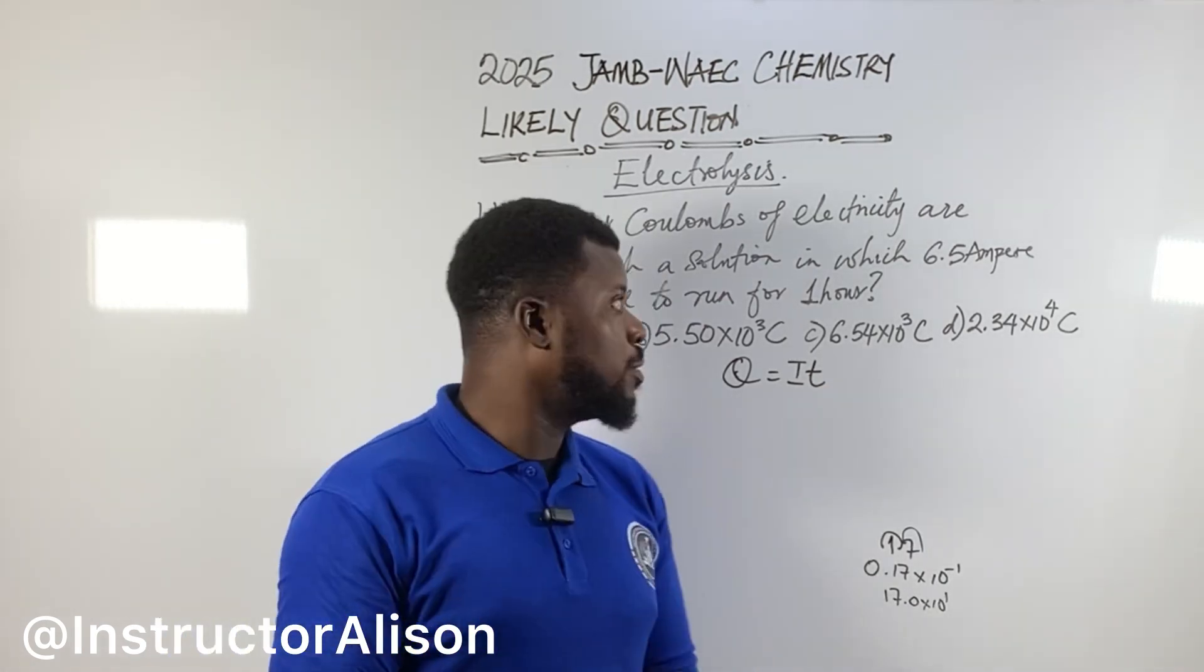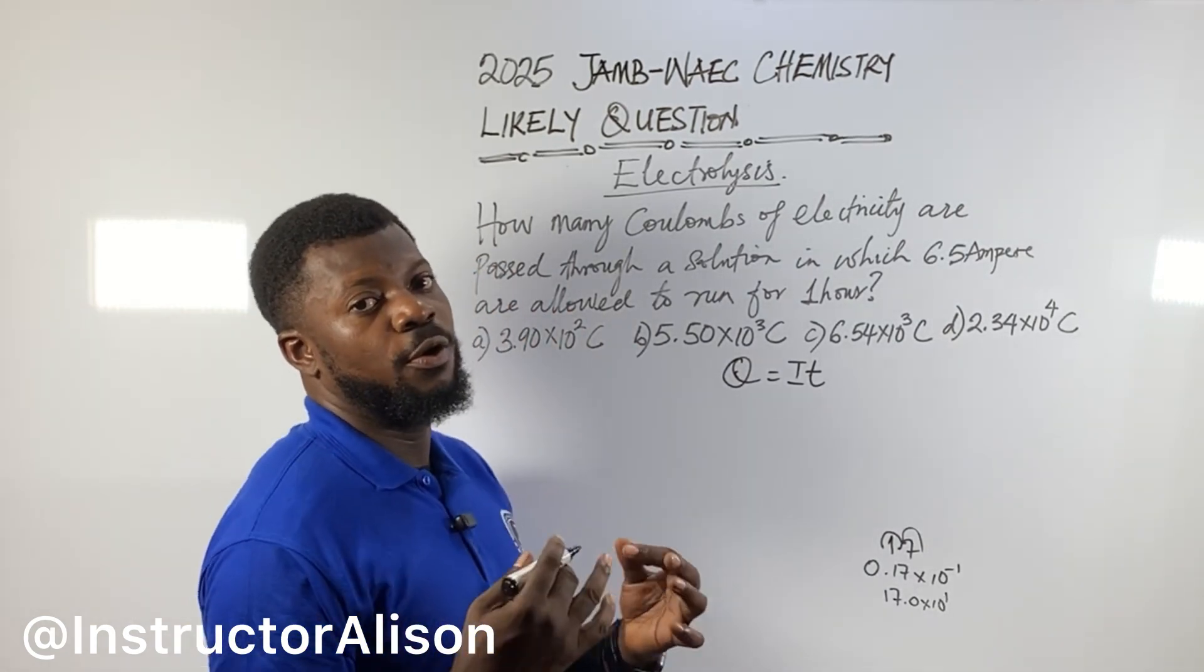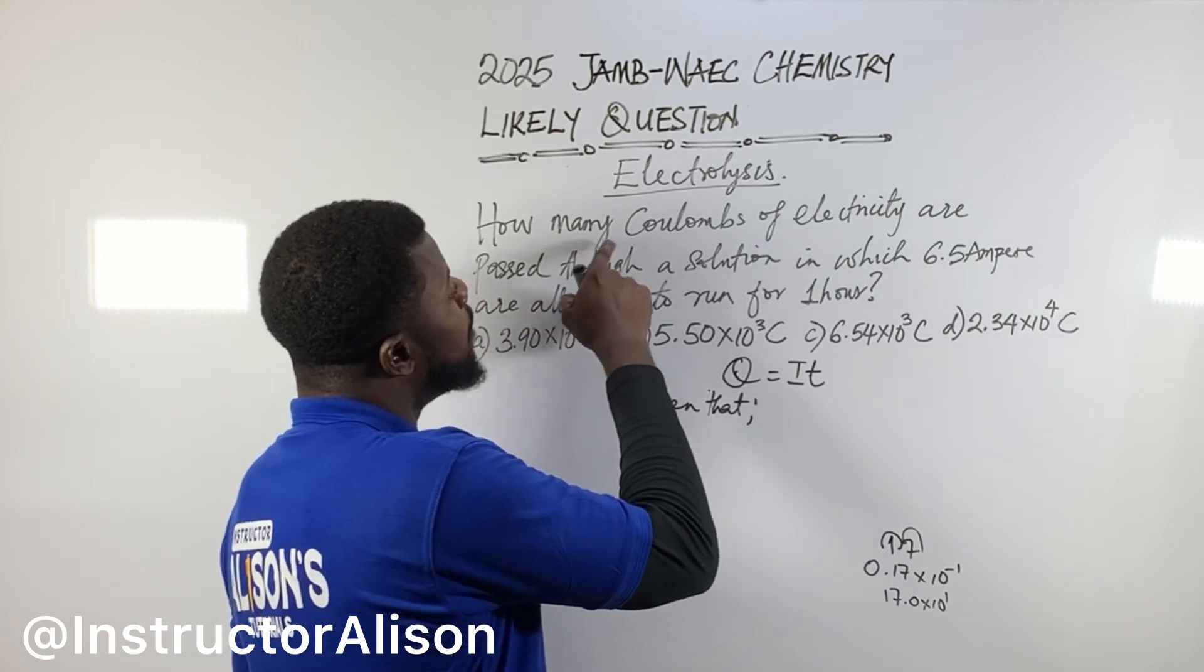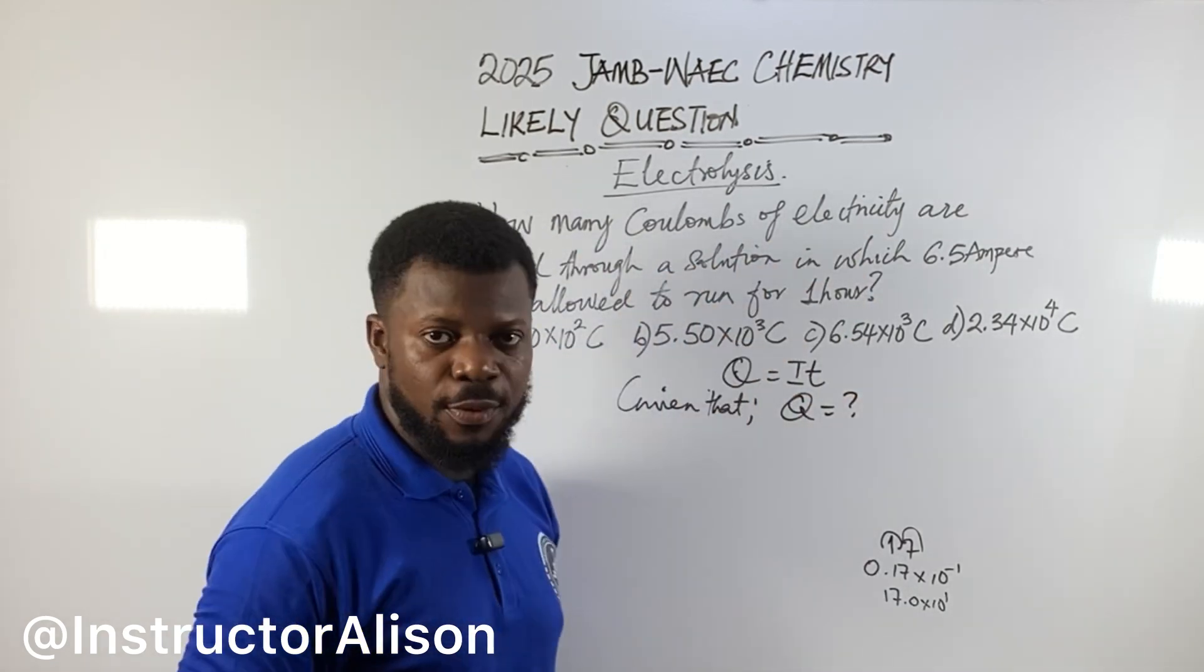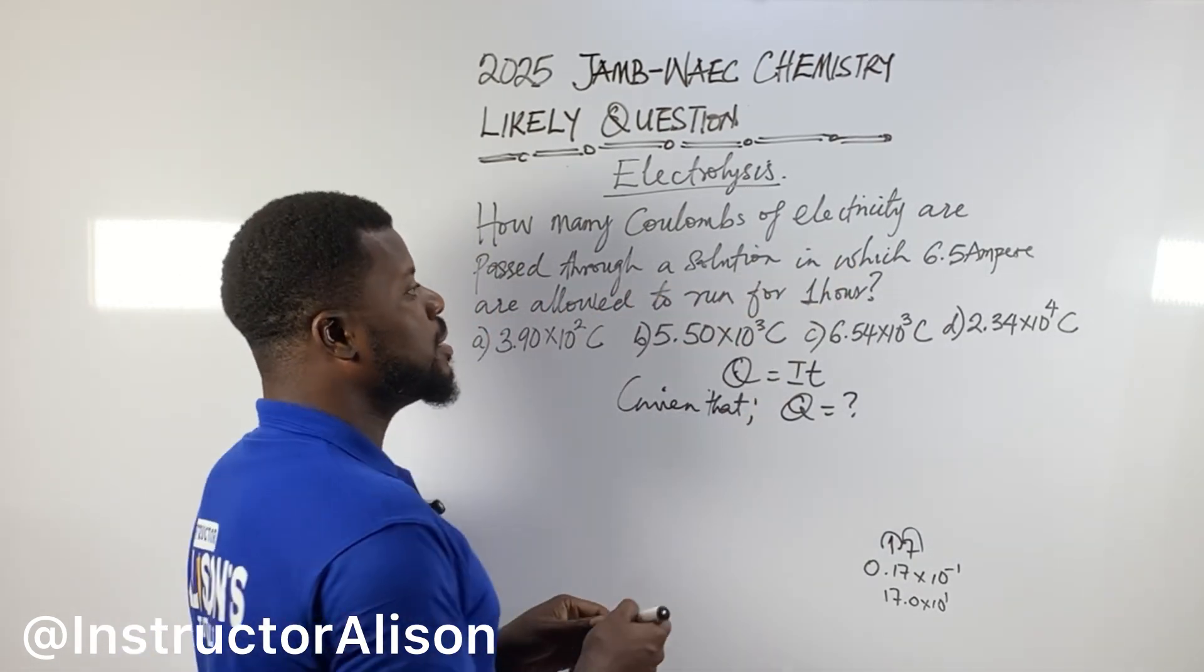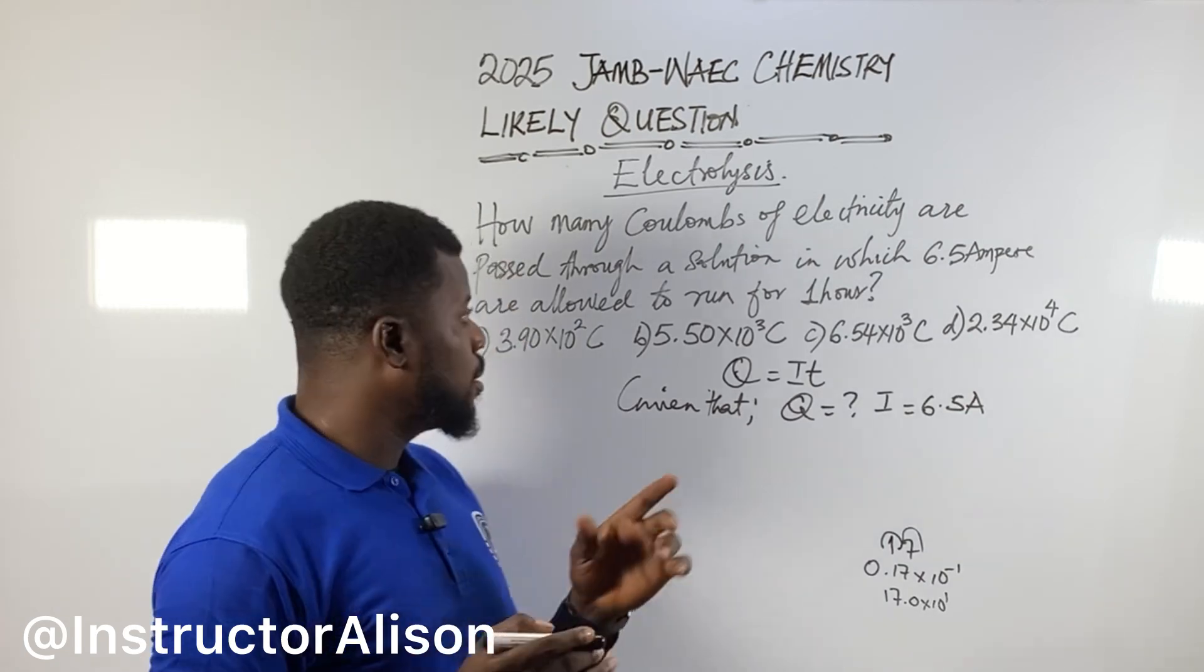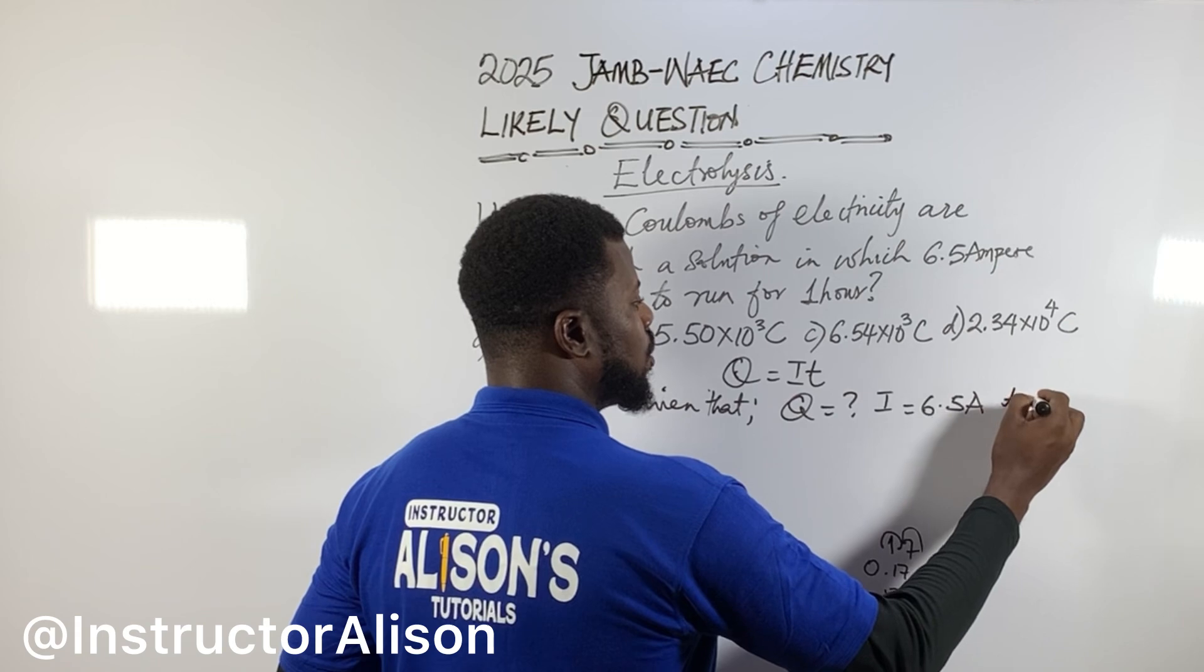I is the current, T is for time, Q is for charge. You understand? So what are you going to do now? Bring out those parameters. Given that, how many coulombs of electricity - that's the charge we don't know. Passed through a solution in which 6.5, that is the current, 6.5 ampere. Allowed to run for one hour. Time equal to one hour.